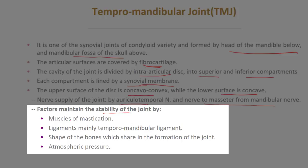Factors that maintain the stability of the joint: number one, muscles of mastication; number two, ligaments, mainly the temporomandibular ligaments; number three, shape of the bones which share in the formation of the joint; and lastly, atmospheric pressure.